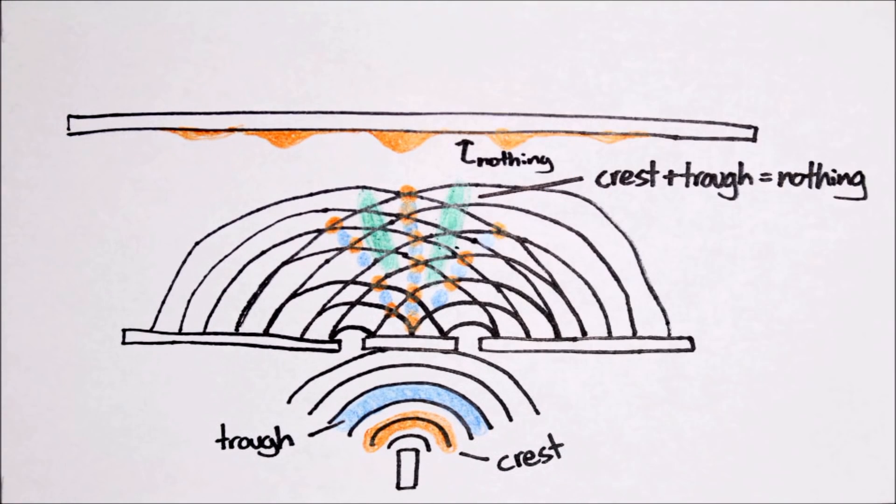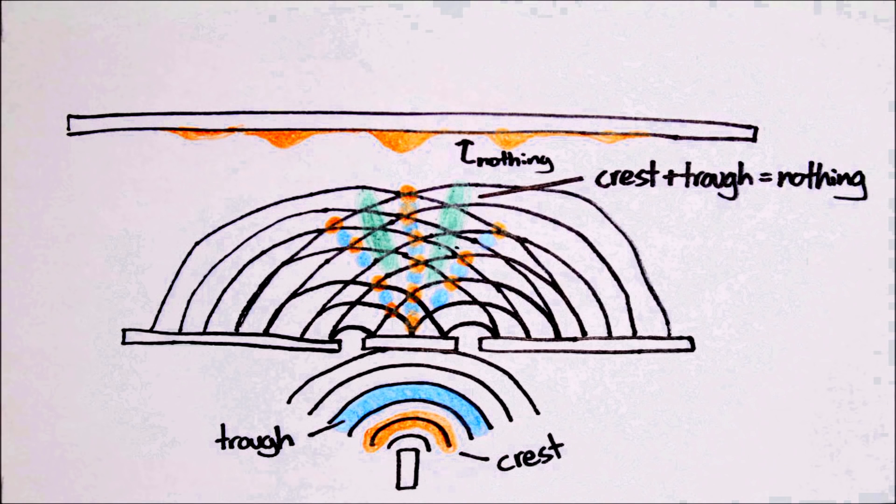On the other hand, these points are where a trough and a crest meet, creating an empty area. In these regions, the wave is cancelled out, leaving no wave at all. This is called destructive interference.